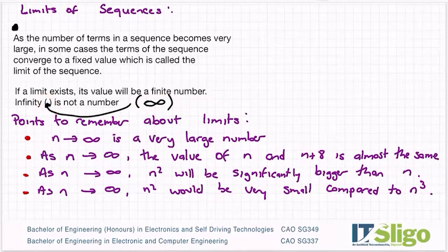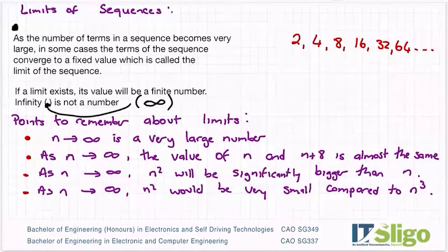So for example, if you had a series 2, 4, I'm thinking of a series that multiplies by 2 each time, 8, 16, 32, 64. If I was to ask you, does this sequence have a limit? Does it converge to a fixed value?